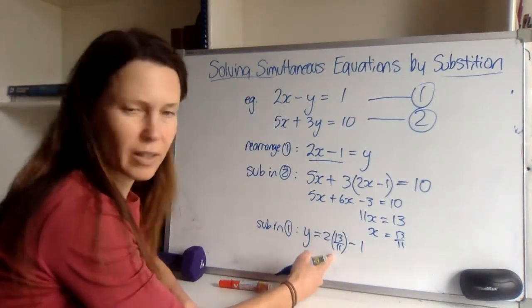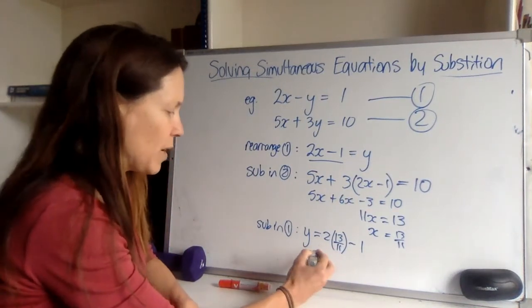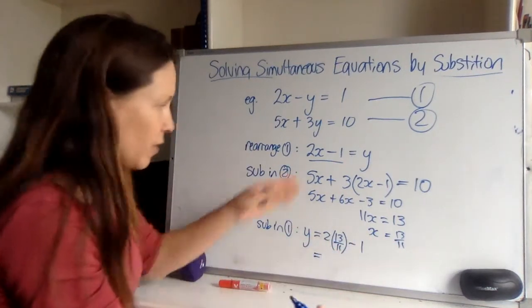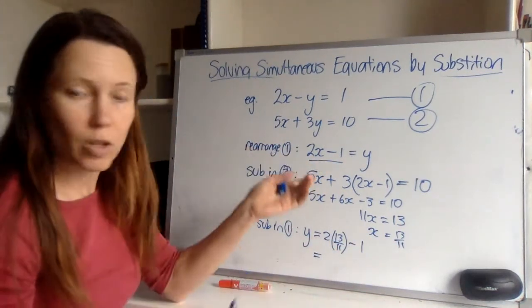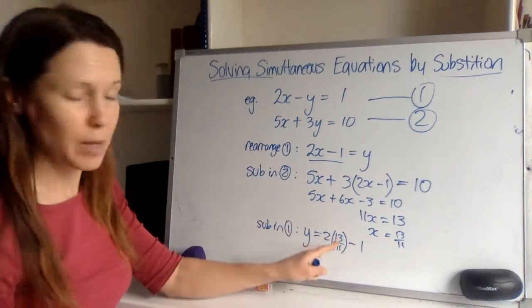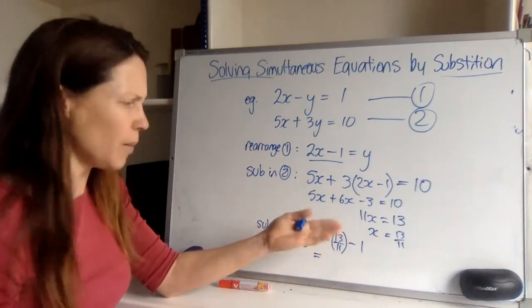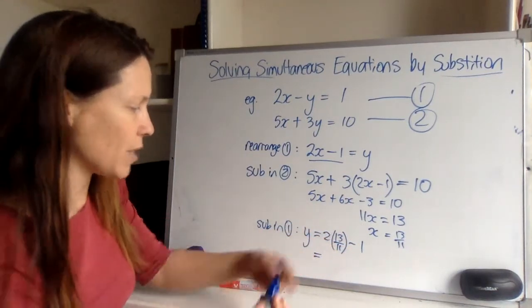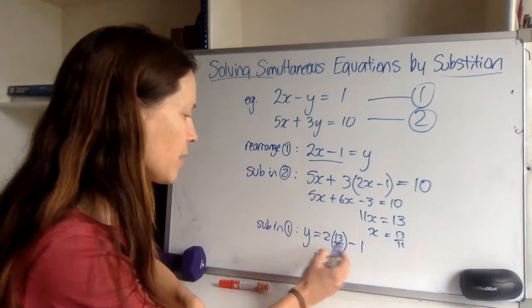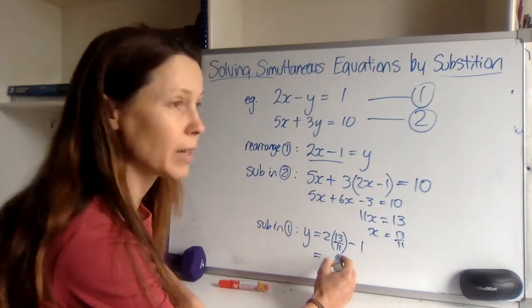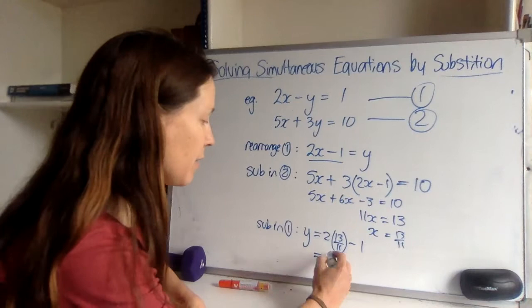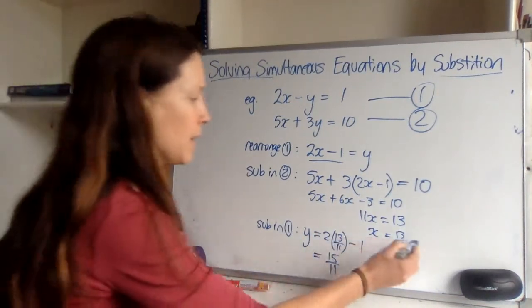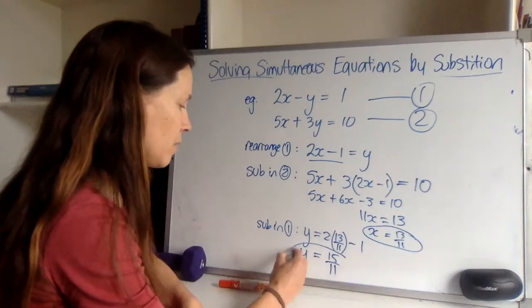Also, if I'd got the wrong answer for x but I did the right thing with it to get y, I might get marks for proceeding on with the correct method. So always show what you're doing before you actually then do it. Here I've got 26 elevenths minus 1, so that's 26 elevenths minus 11 elevenths, so it's 15 elevenths, or you could write 1 and 4 elevenths, either way. So I've found x and I've found y.